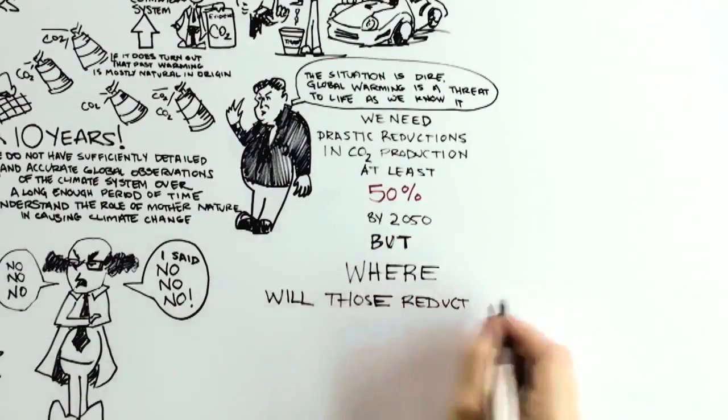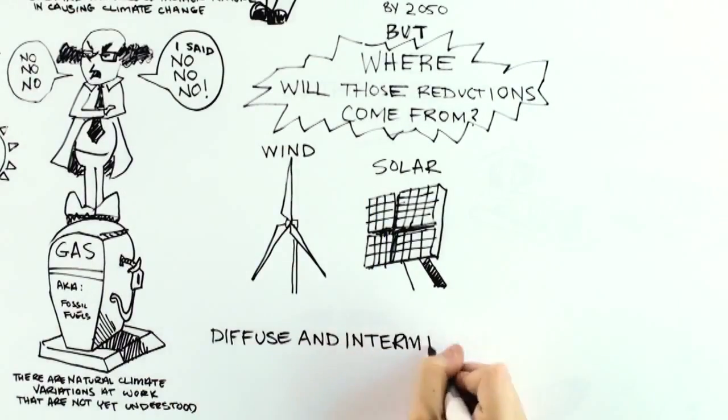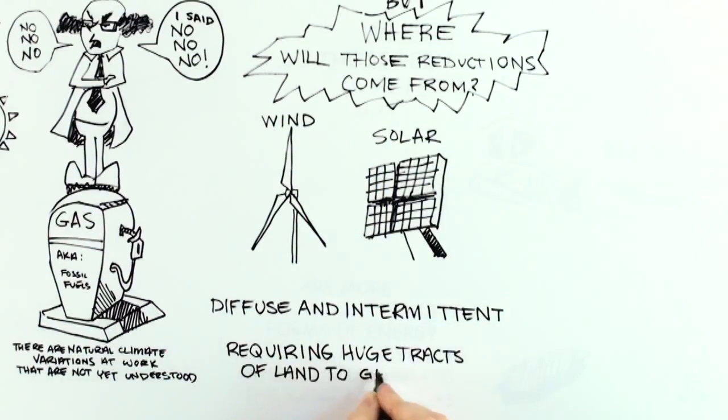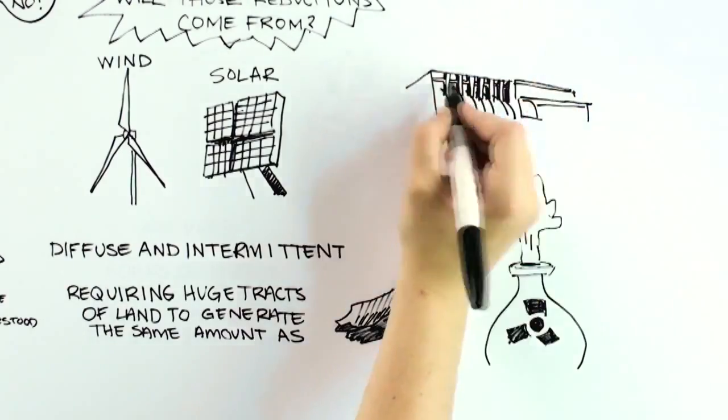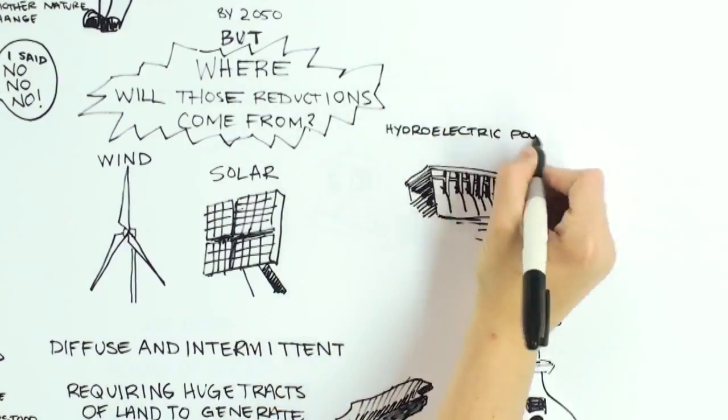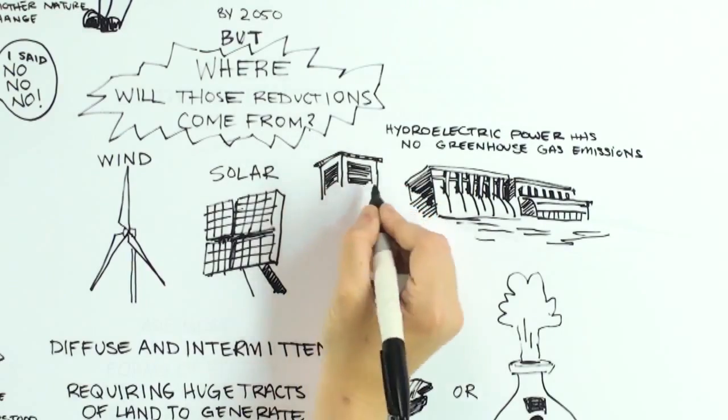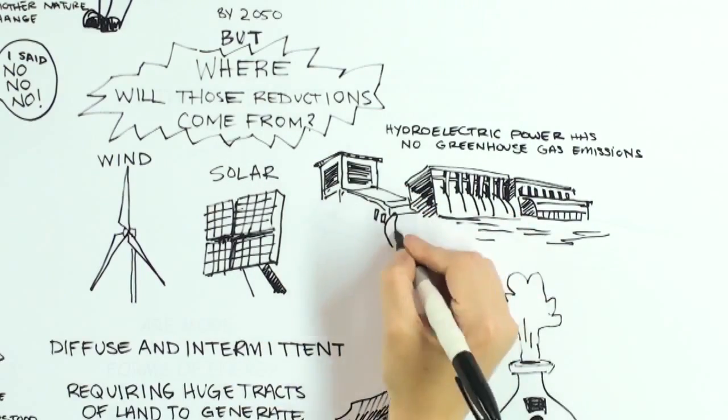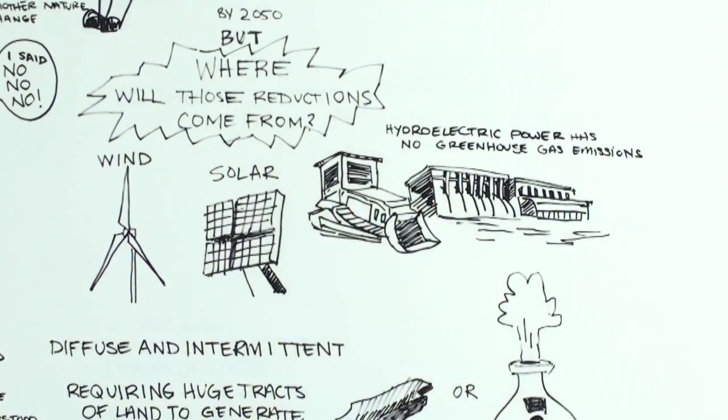But where will those reductions come from? Solar and wind are two diffuse and intermittent forms of energy, requiring huge tracts of land to generate the same amount of energy as a single coal-fired or nuclear power plant. Hydroelectric power is attractive since it has essentially no greenhouse gas emissions. Environmental concerns, though, are not only blocking the construction of new hydro dams, they are leading to the removal of some of the existing ones.